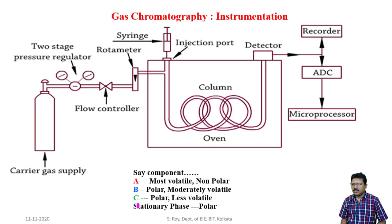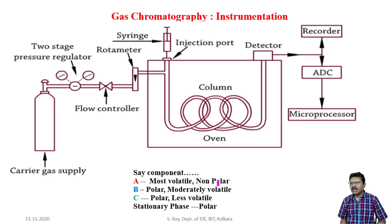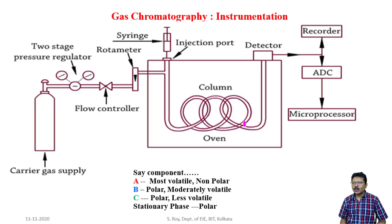Among these three components, A is most volatile and non-polar. Since it is non-polar, it will not interact with the polar stationary phase. Also, since it is most volatile, A will move through the column with the highest speed and will reach the outlet of the column first.